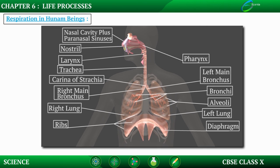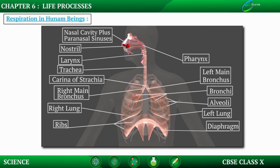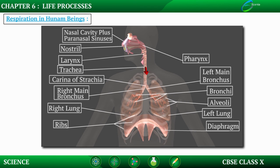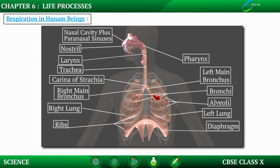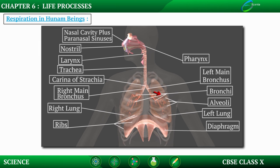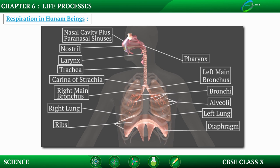So during respiration, air enters through the nostrils first, then passes through the throat, moves into the lungs, and fills the expanded alveoli. This is all about respiration in human beings.